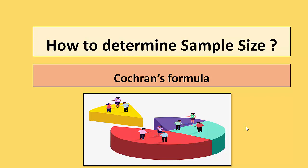Hello viewers. In research there are situations where your population is unknown and infinite. Suppose your population is unknown and infinite — what to do? Here in this video we are going to find out the solution for such a situation. If your population is infinite and unknown, then you can determine the sample size with the help of Cochran's formula.